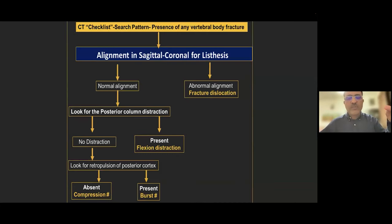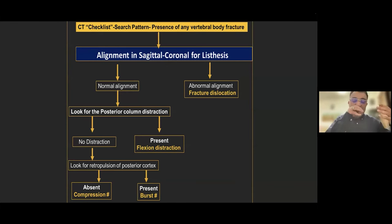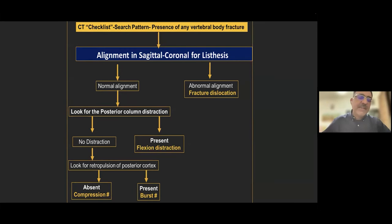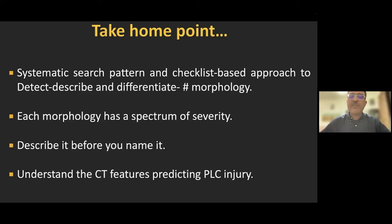In summary, the CT systematic search pattern is: first look for alignment in sagittal, coronal, and axial planes — if malalignment is present, it is a type C fracture dislocation. If alignment is normal, look for posterior column distraction — if present, it is a B type fracture (B1 or B2). If no distraction, look for retropulsion or involvement of the posterior cortex — if present, it is burst (A3 or A4); if absent, it is compression (A1 or A2). The take-home points are: use a systematic, checklist-based approach; each morphology is a spectrum — describe it well before naming it; and understand which CT features predict PLC injuries including kyphosis, vertebral body height loss, and posterior neural arch fractures.